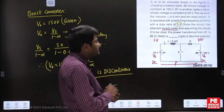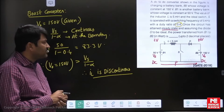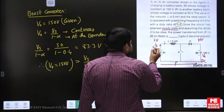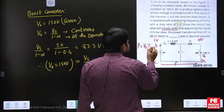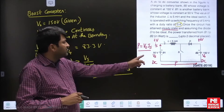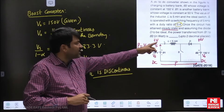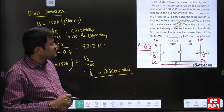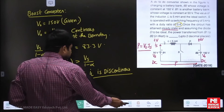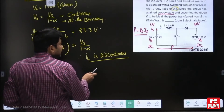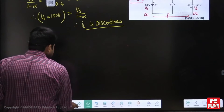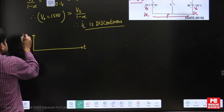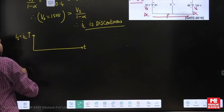In this problem the inductive current is discontinuous. Here, inductive current is the same as supply current. To calculate the power transferred, we need Vs times Is. So we have to find the average value of the source current, which is the same as the average inductor current. In a boost converter, inductor current and source current are the same. For discontinuous conduction, let us draw the IL waveform.